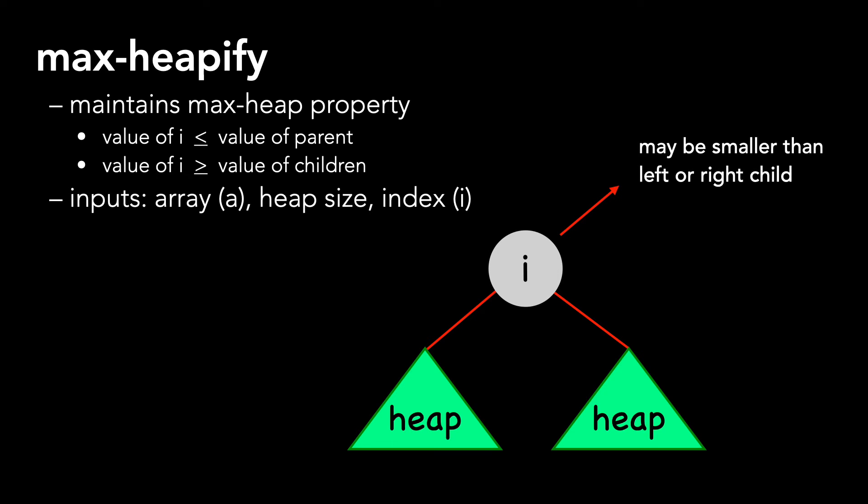i's value may be smaller than the left or right child, in which case we have work to do to maintain our heap. If the value of i is indeed smaller, we say that it floats down to its proper place in the tree.